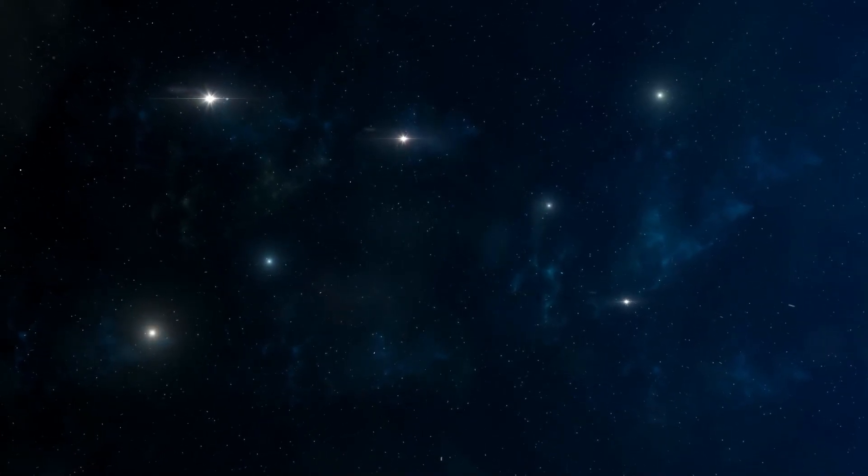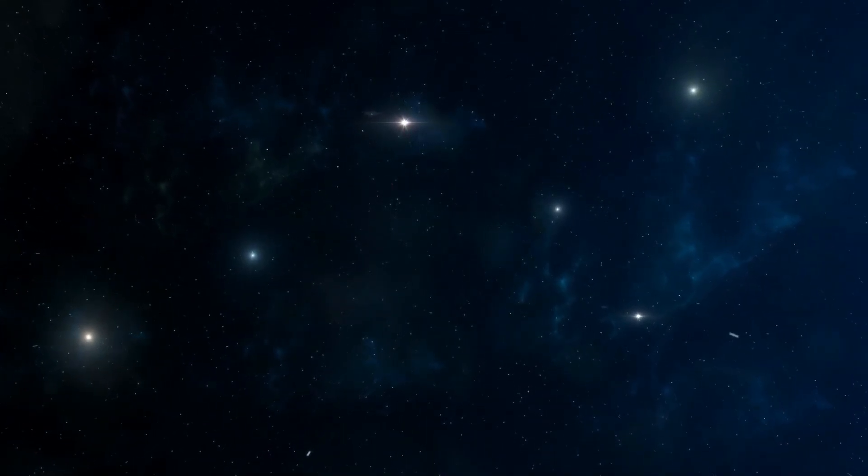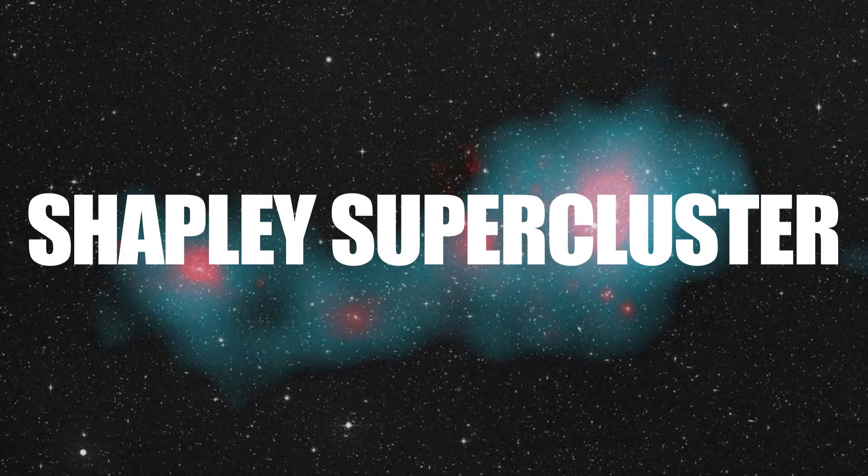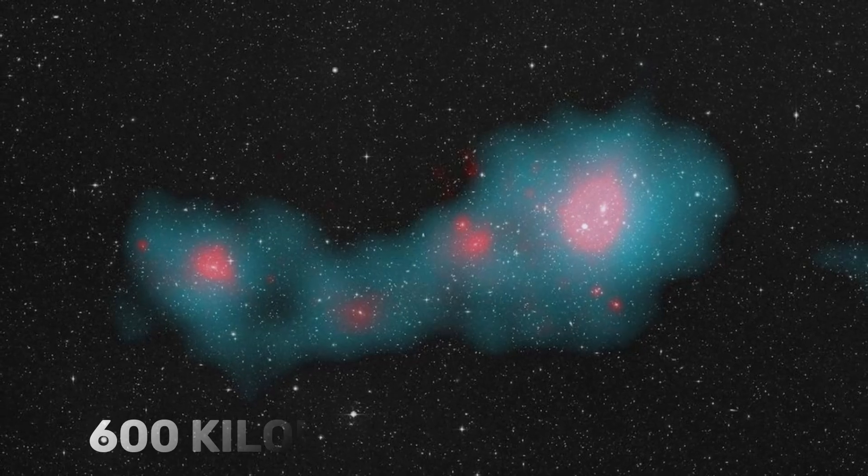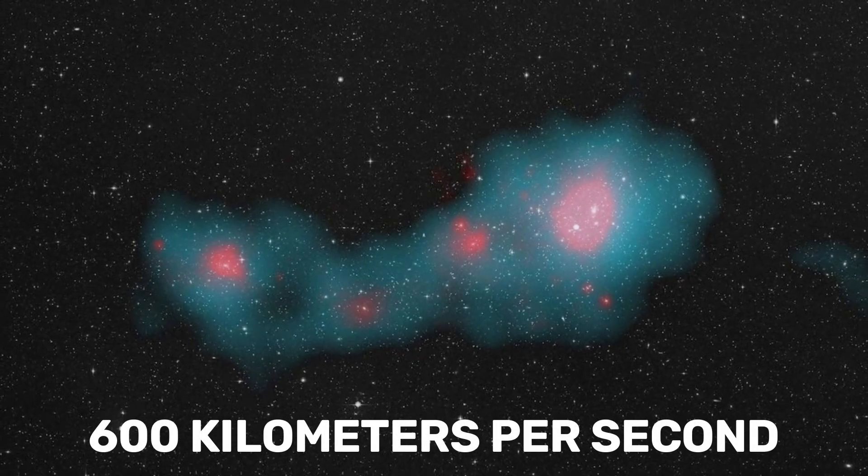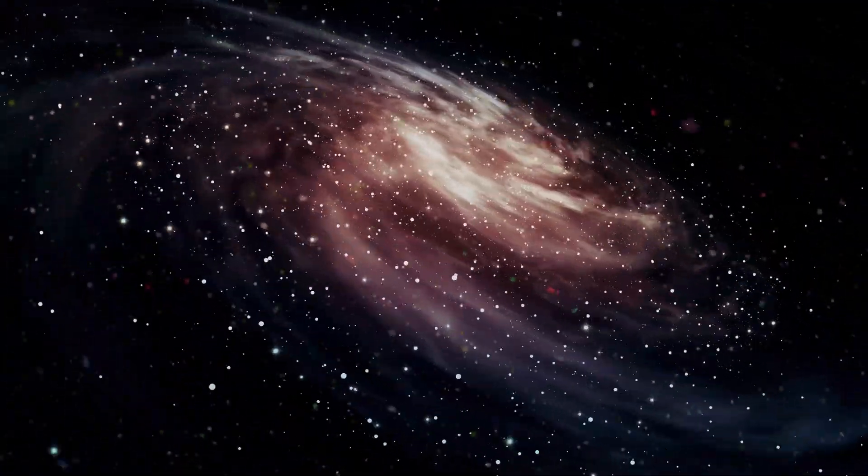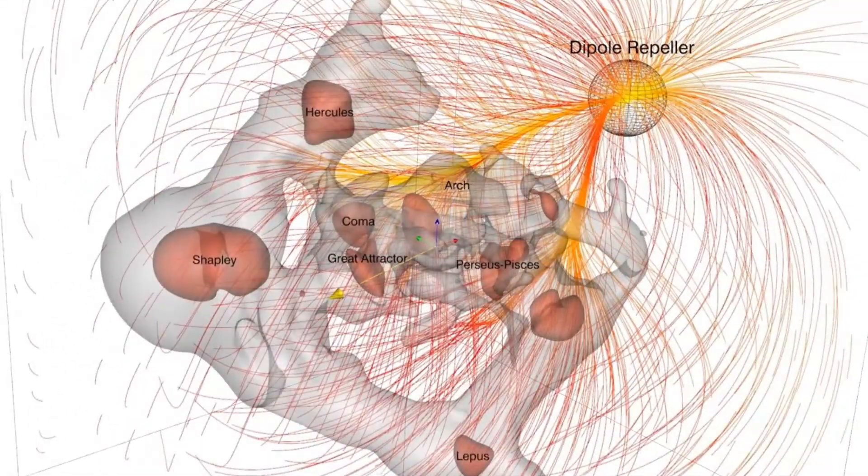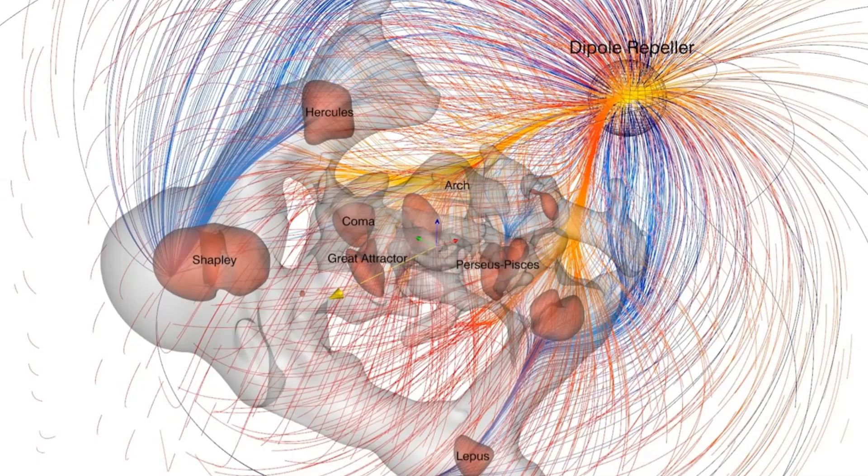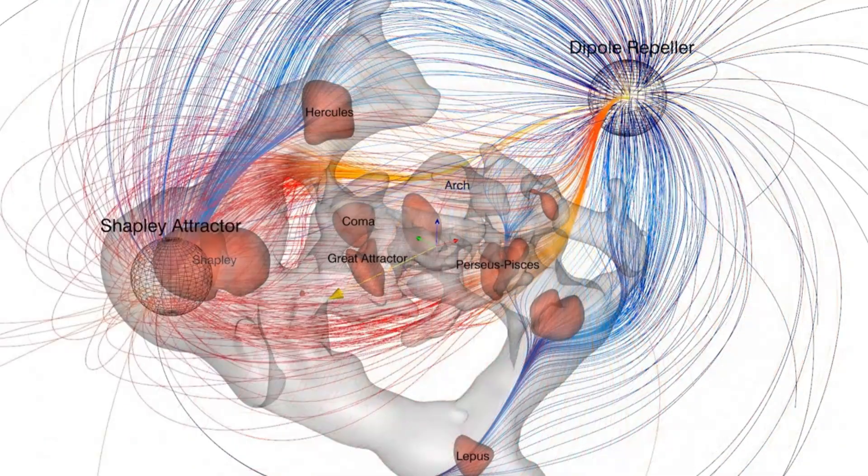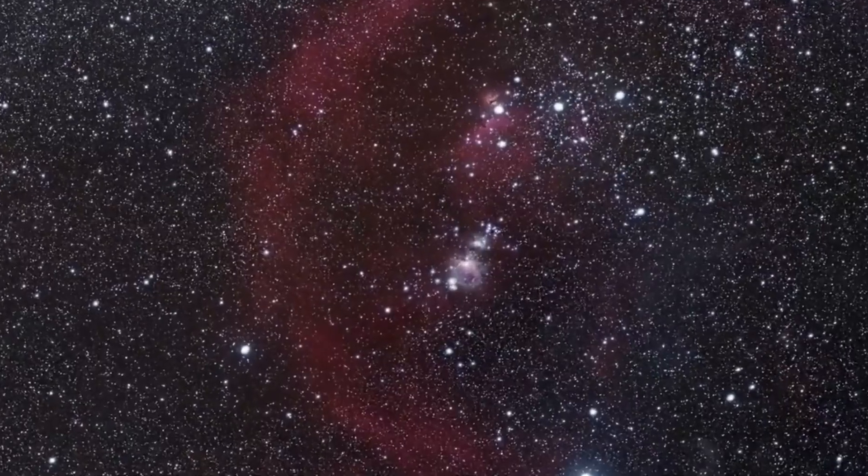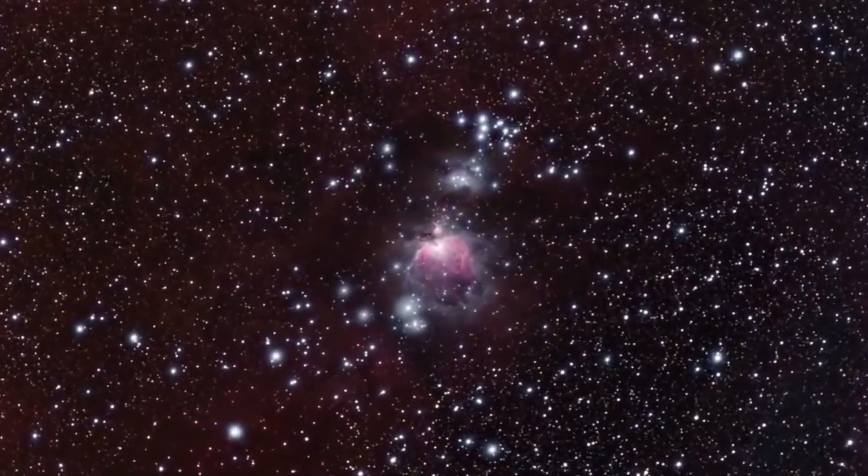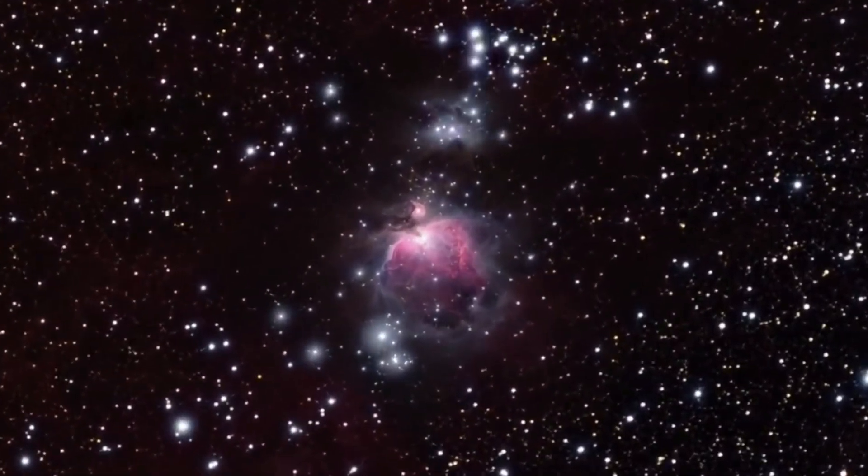What adds to the fascination is that this region is also advancing towards another colossal supercluster, the Shapley supercluster, at a velocity of approximately 600 kilometers per second. This means that together with the Milky Way and the Great Attractor, we are being pulled into another structure with even more gravitational force than the Great Attractor. This cosmic flow of matter has important implications for the future of all the galaxies involved, including the Milky Way.